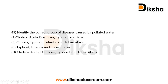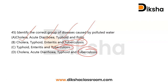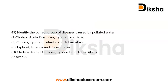The question is simply regarding water-contaminated diseases — diseases that spread through contaminated water. Cholera, acute diarrhea, typhoid, and polio all spread through water. Tuberculosis, which is caused by the bacteria Mycobacterium tuberculosis, is normally not spread through water. Tuberculosis appears in all options other than option A, so option A — cholera, acute diarrhea, typhoid, and polio — is the correct answer.